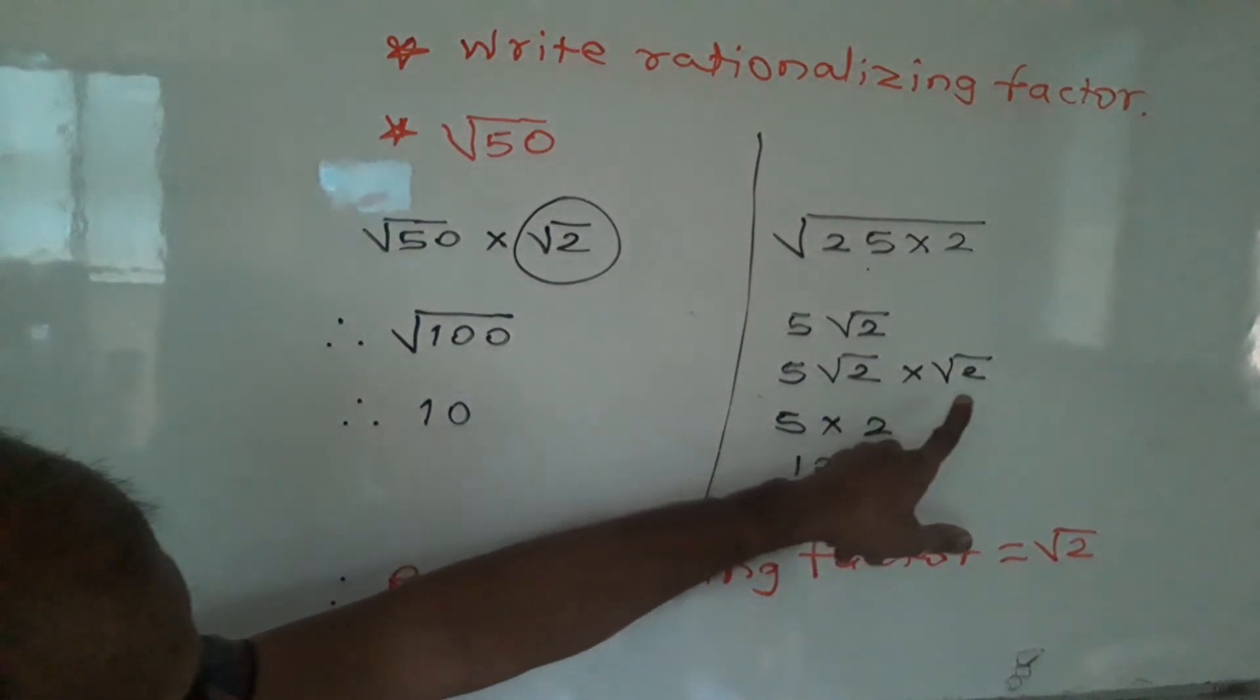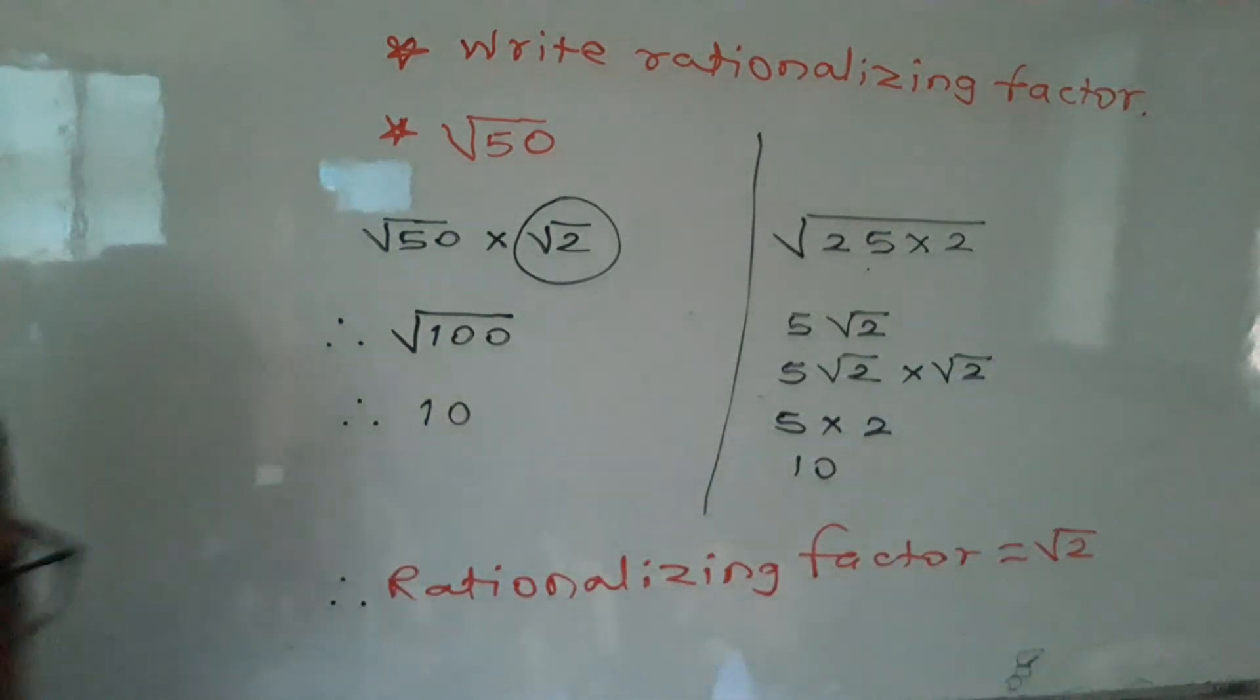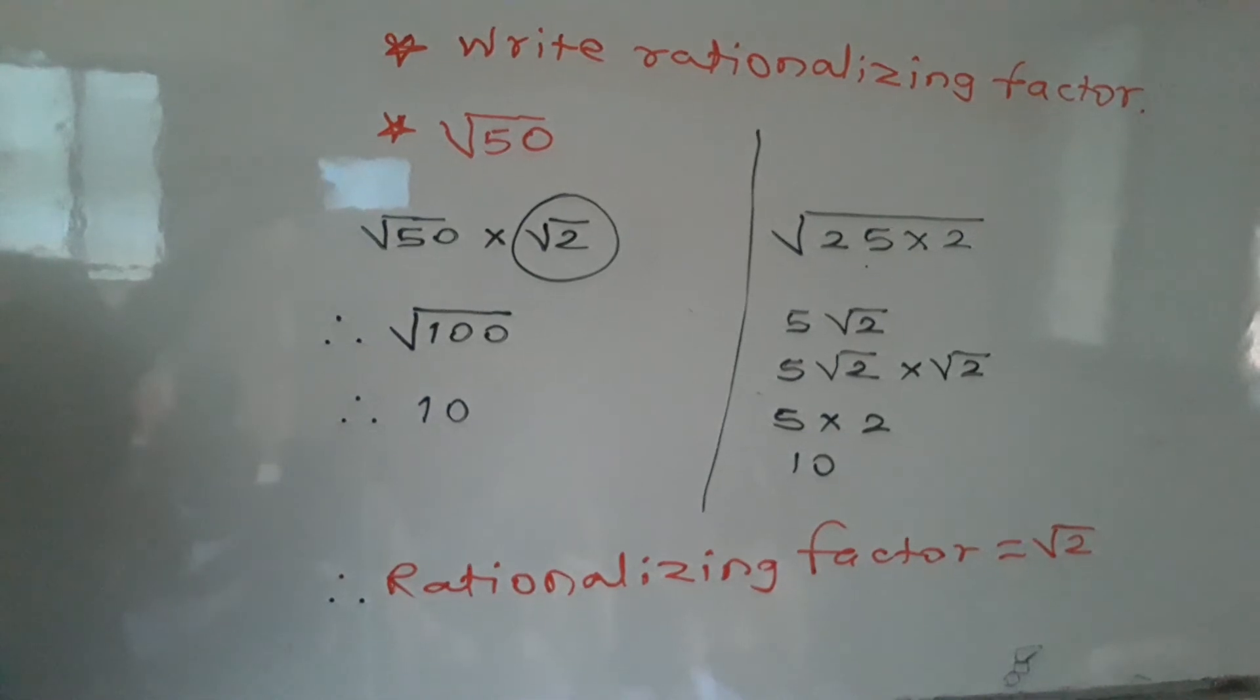Therefore, our rationalizing factor is square root of 2. This is our answer by two ways.